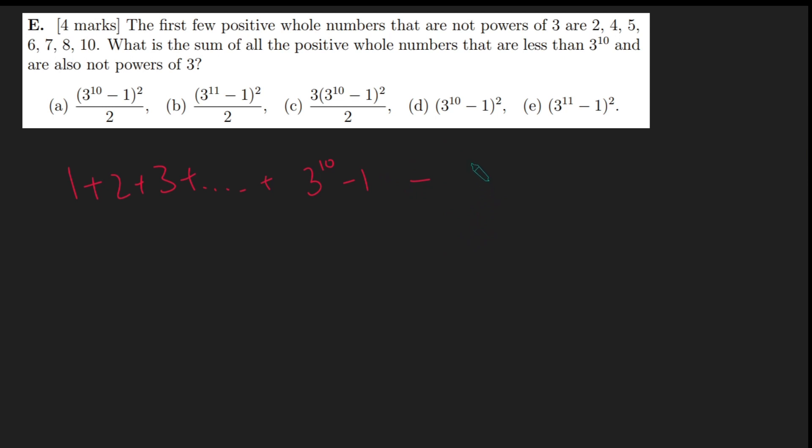So that means they're going to subtract off 1 plus 3 plus 9 plus so on all the way up to 3 to the 9 because that's the last power of 3 in this list. Okay, now we just need to work out what this equals.